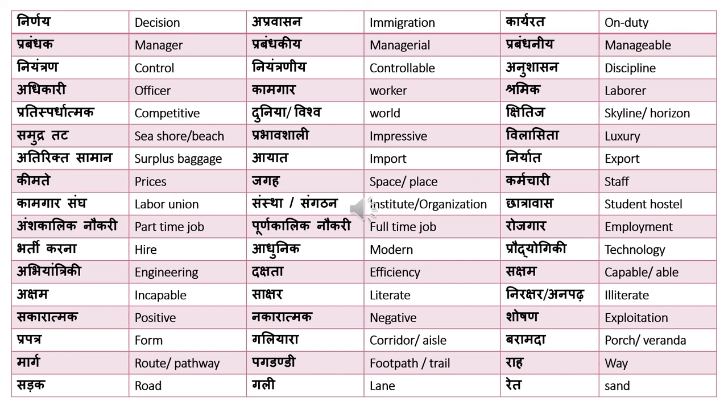'Sada' means road, 'gali' means lane, and 'rave' means sand. These are the next set of words.